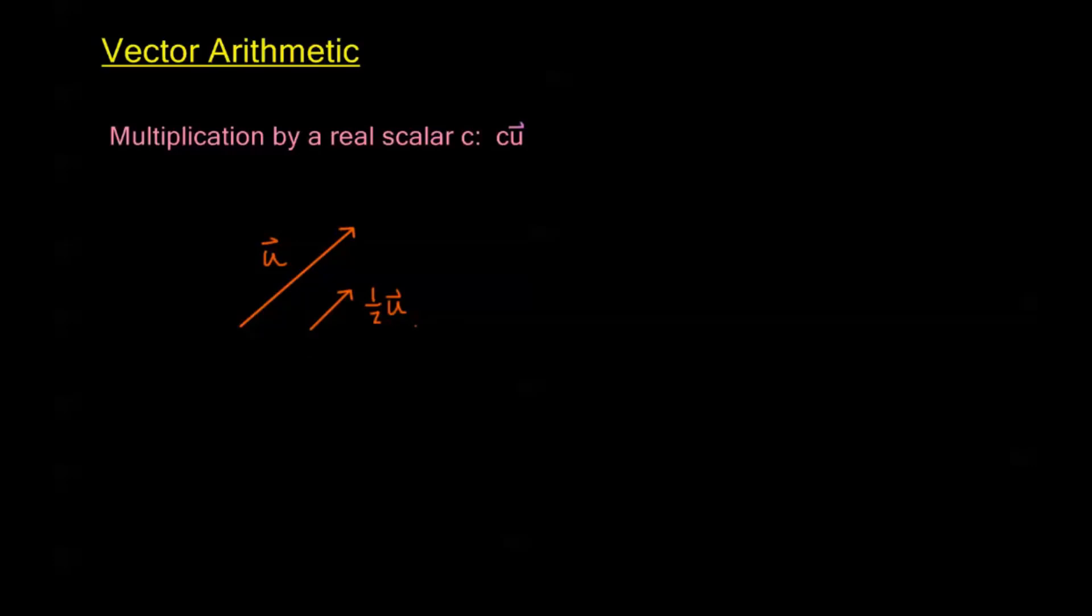Now I could multiply by a number greater than one as well. Let's say I multiply by two. So let's say this is twice as long as my original vector u. We would call this 2u. Again, it would be in the same direction as u, but I would have twice the magnitude.